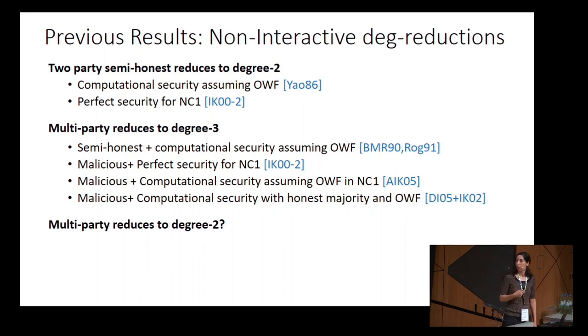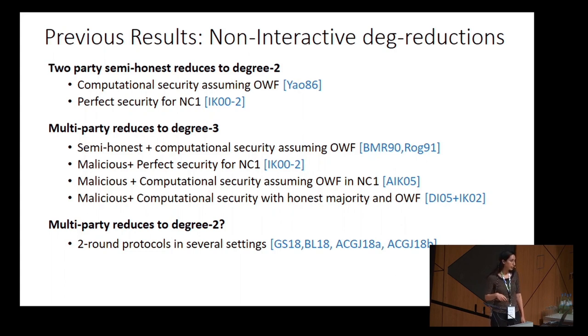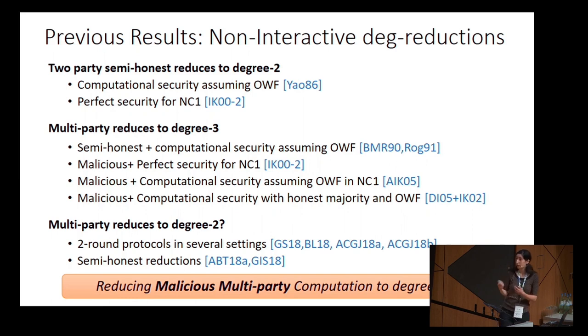Then a natural question is whether there is a reduction to degree 2 in the multi-party setting. There were a few breakthrough results in the last year that showed protocols that have only two rounds in the multi-party setting, but they don't show a general reduction. They face each security notion separately and try to solve the problem in independent steps. Recently in TCC, there were two works that showed a non-interactive reduction, but only in the semi-honest setting. The natural follow-up question is whether there is such reduction in the multi-party setting for degree 2 but with malicious security. This is the question that we solve, and our answer is yes.